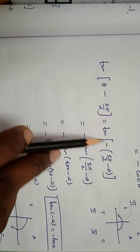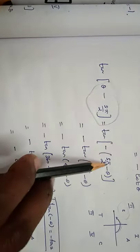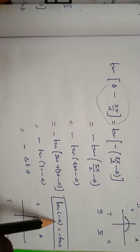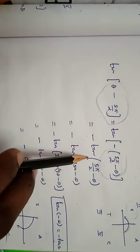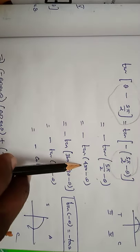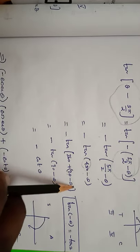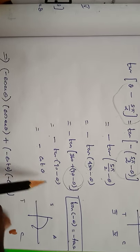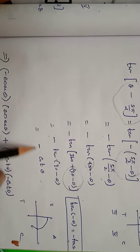For tan(θ − 5π/2), taking minus as common gives −tan(5π/2 − θ) = −tan(450° − θ) = −tan(360° + 90° − θ) = −tan(90° − θ). Since tan(90° − θ) = cot θ, we get −cot θ.